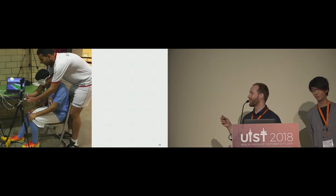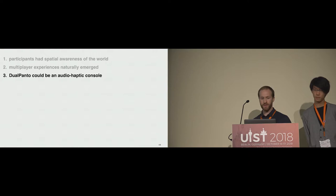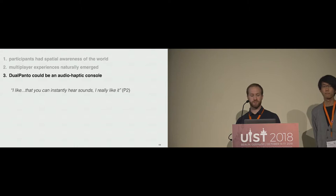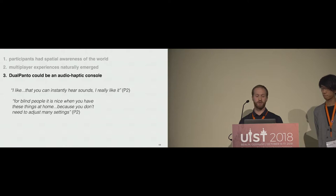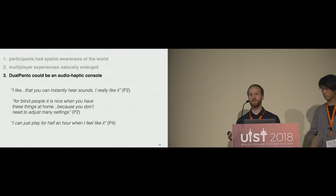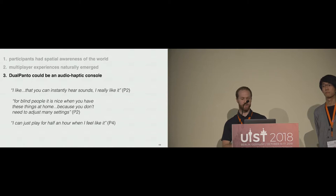An impromptu co-op mode emerged where one person operates the pantograph and the other operates the foot pedal, just because they both really wanted to play. The final finding was that Dual Panto could serve as a sort of audio-haptic console, beneficial for users. Participants liked that you could instantly hear sounds and that it was really interactive. For blind people, it's nice to have this at home because you don't need to adjust many settings — you can just pick up and play for half an hour.